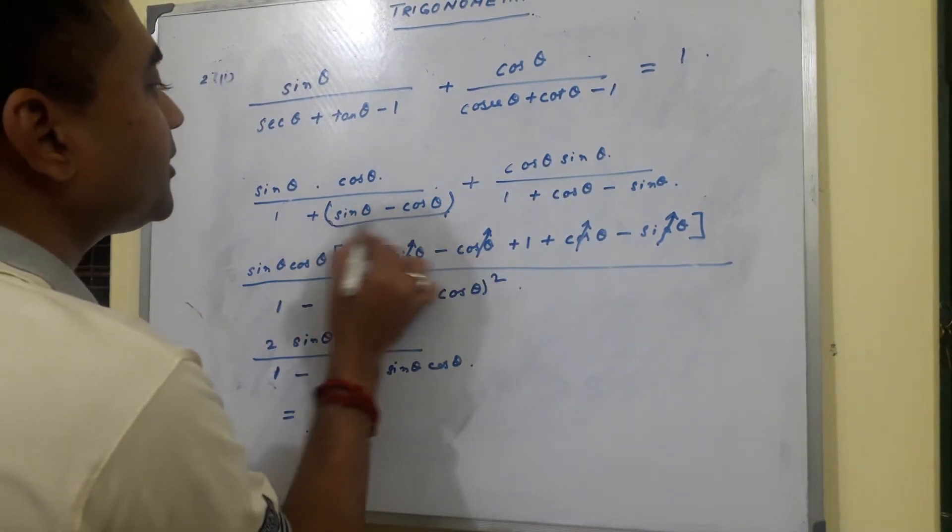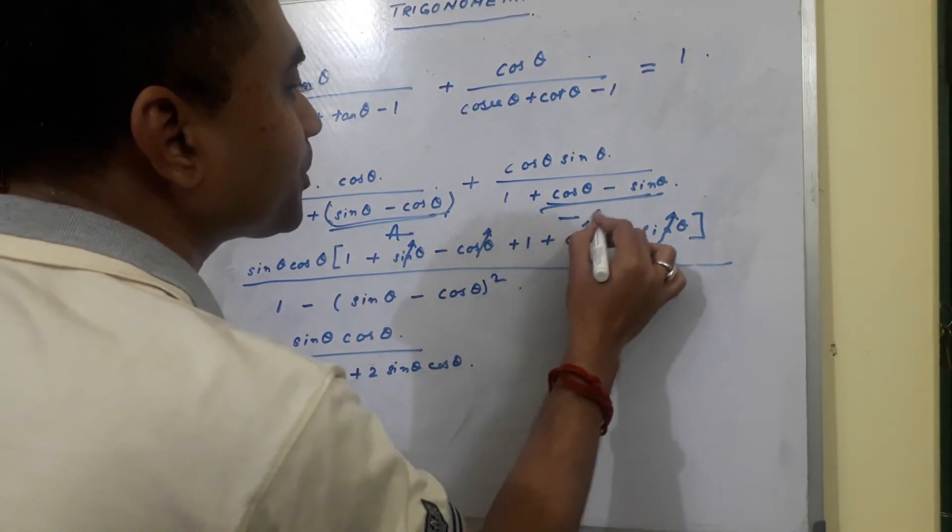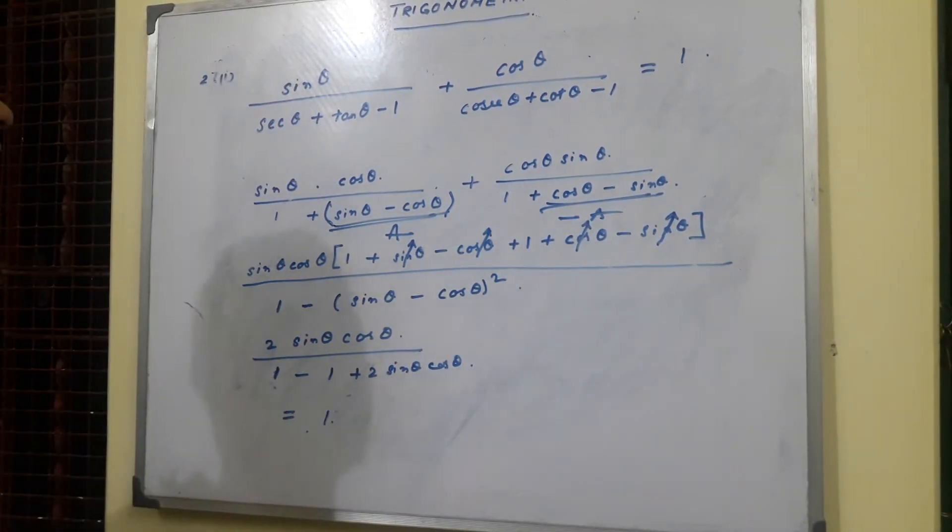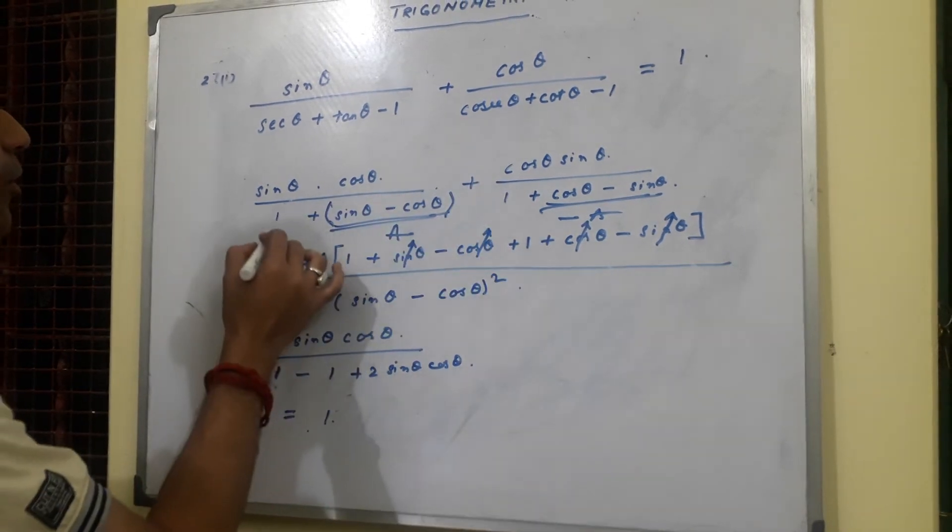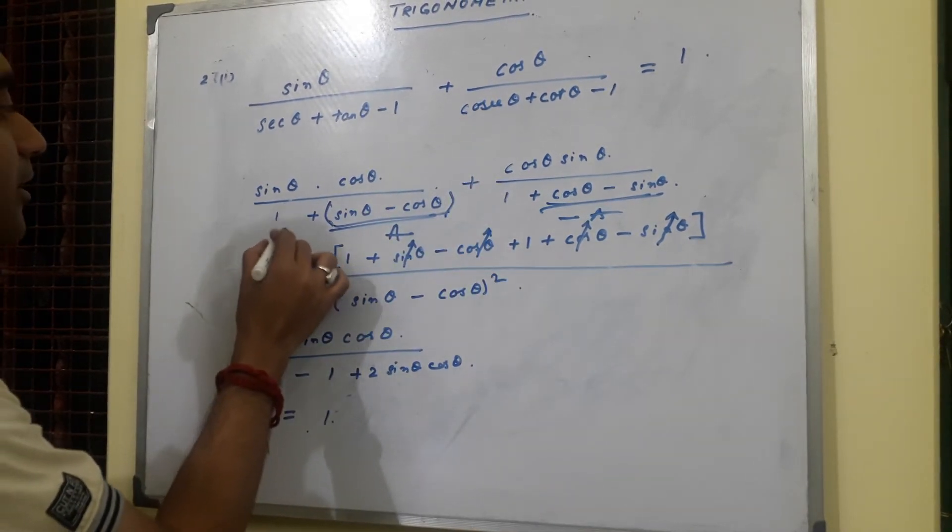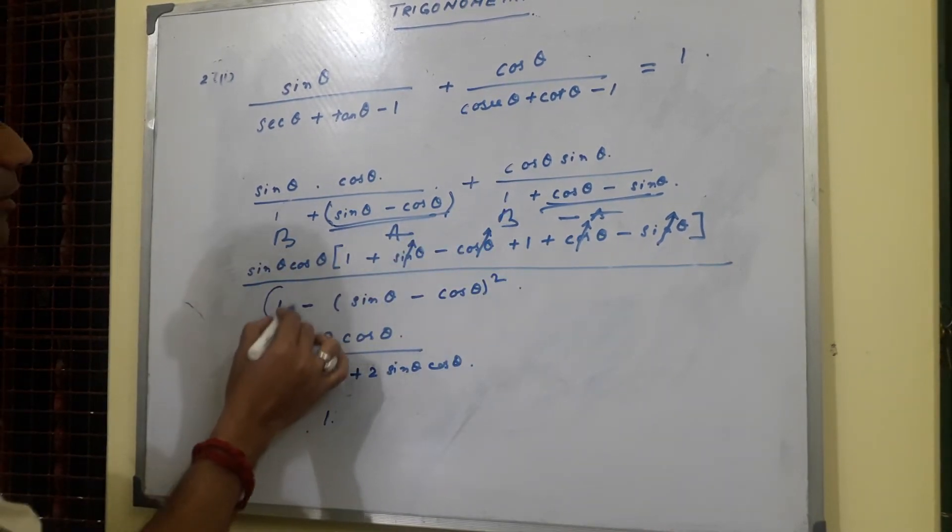Now if I treat this term as say 'a', so this term becomes minus a. So once that becomes, we can easily take this, we multiply this as if 1 is taken as b, and this is b. So a plus b, a minus b: 1 is the whole.